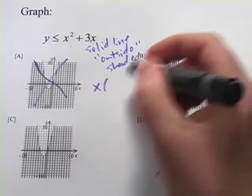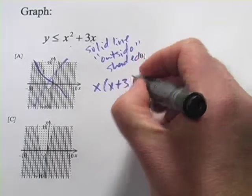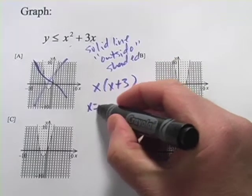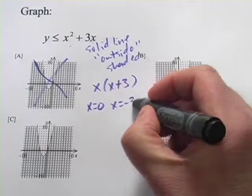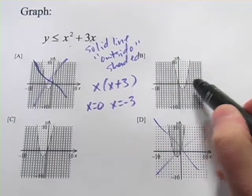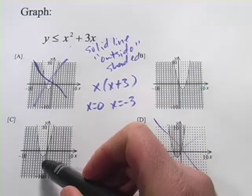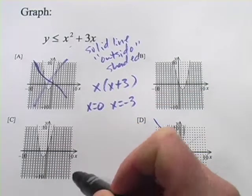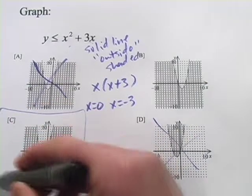We get x, if we take an x out, we get x and x plus 3. So our solutions here are x equals 0 and x equals negative 3. Here we have 0 and positive 3. Here we have 0 and negative 3. So it looks like c is the only one that fits all those conditions.